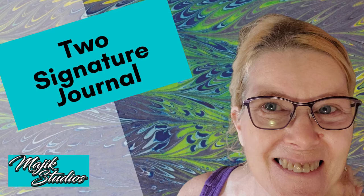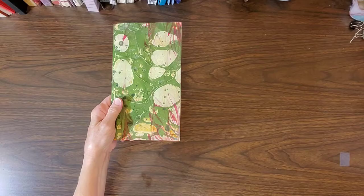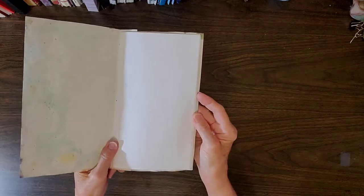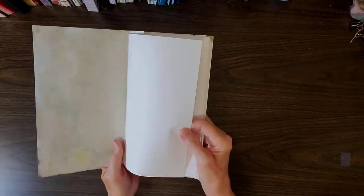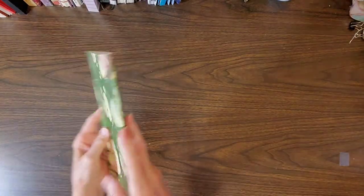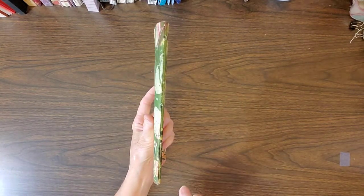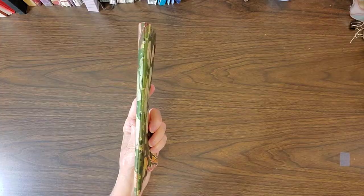Hello, Pam here with Magic Studios for another mini lesson. Today, a two-signature journal. It makes a really cool journal of a single eight and a half by eleven sheet of paper or cardstock. There are two stitching places on either side of that middle page and you can't see the stitches at all.